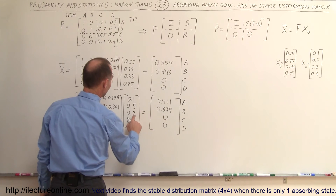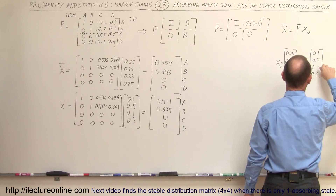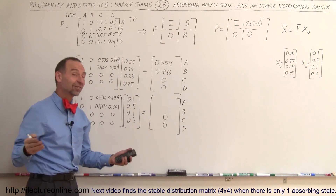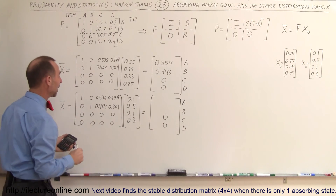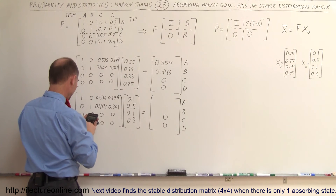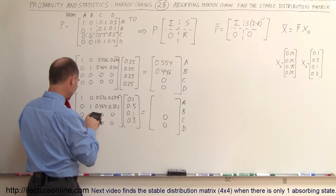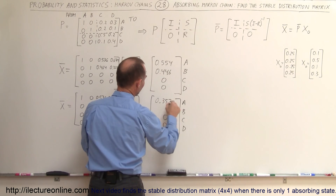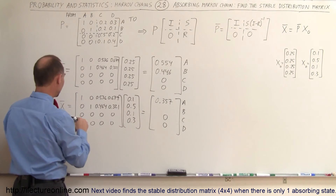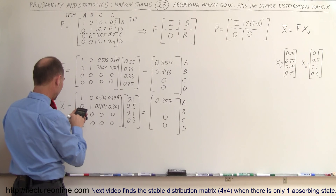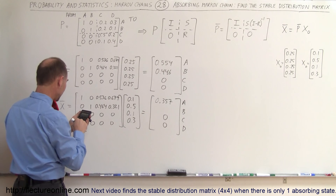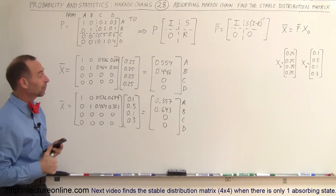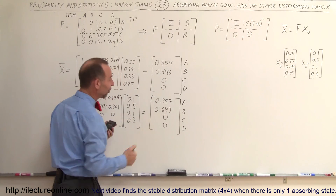Let's correct the initial distribution so it adds up to one by changing 0.2 to 0.1, giving us 0.1, 0.5, 0.1, 0.3. Recalculating A: 0.1 plus 0.536 times 0.1 plus 0.679 times 0.3 equals 0.357, so 35.7% goes to A. For B: 0.5 plus 0.464 times 0.1 plus 0.321 times 0.3 equals 0.643, so 64.3% goes to B. They add up to one, so this is correct.